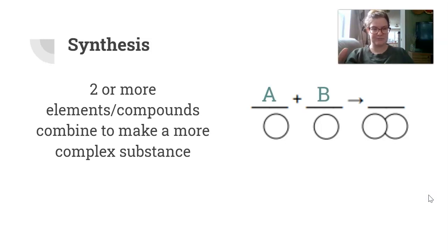You would start out—this is the format for the equation—you start out with your A and your B, which you can see represented by these circles. They combine together to form AB, where those two things are now bonded together.